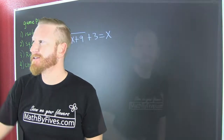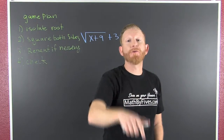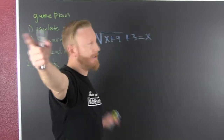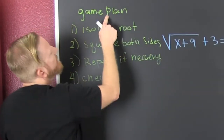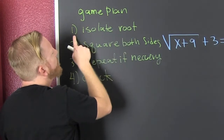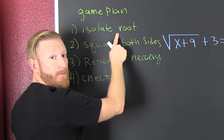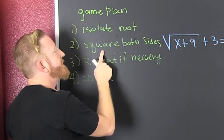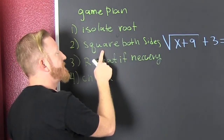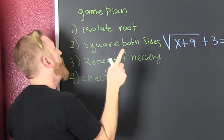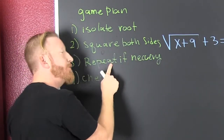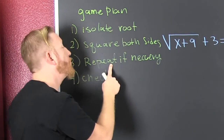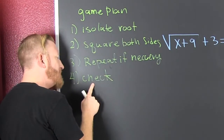Solving radical equations. In order to do this, we need a game plan. First, we're going to isolate the root — get it by itself on one side. Then we're going to square both sides. And we're going to repeat if necessary; if there's any roots left, we'll repeat it. Then check it.